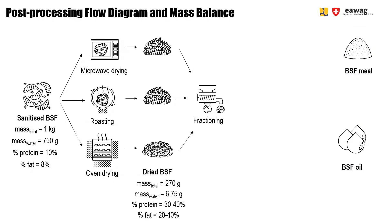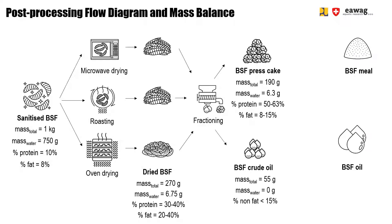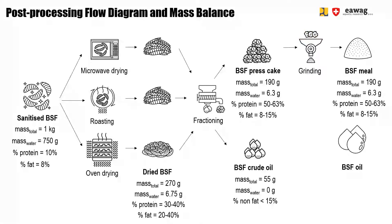We will show you how to mechanically fraction dried BSF larvae by using a screw press. The screw press will give two outputs: the BSF pressed cake and the BSF crude oil. The pressed cake accounts for the larger mass fraction and consists mainly of protein. The pressed cake has a rough texture, therefore it needs to be further refined by grinding it down to BSF meal. In this last step, the composition and the mass balance is not changed anymore, only the texture.